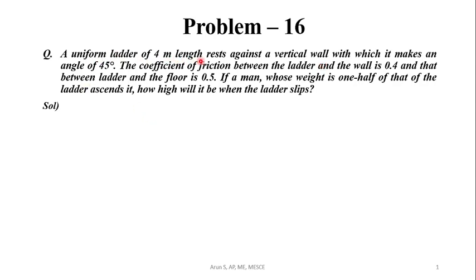A uniform ladder of 4 meter length rests against a vertical wall with which it makes an angle of 45 degrees. The coefficient of friction between ladder and wall is 0.4, and that between ladder and floor is 0.5. If a man whose weight is one half of that of the ladder ascends it, how high will it be when the ladder slips?